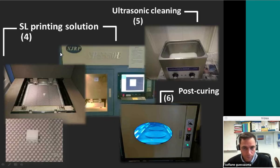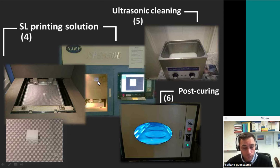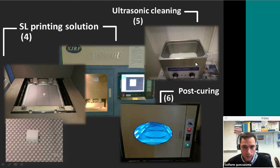Now in the fourth and fifth steps, you have the manufacturing step itself. Here you have a photograph showing the liquid resin. The laser strikes the surface, it draws some patterns, and this pattern polymerizes the resin. Then the platform moves up, a liquid layer forms on top, the laser strikes again and builds the second layer, and so on, until you get the three-dimensional feature.